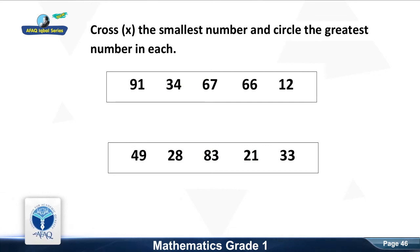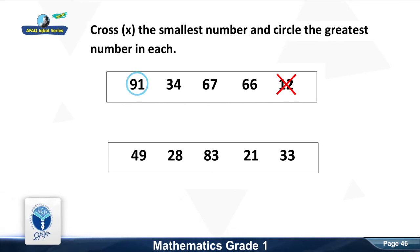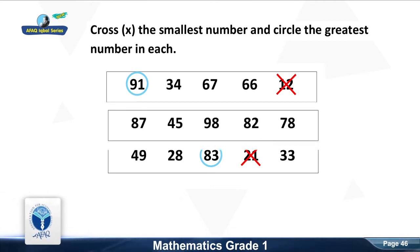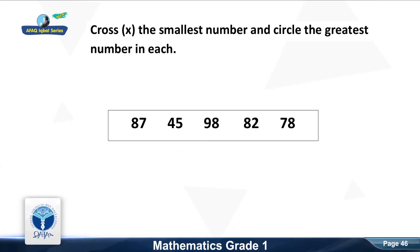Next group: cross the smallest number. Good, it is twelve. Circle the greatest number. Good, it is ninety-one. Next group: cross the smallest number. Good, it is forty-five. Circle the greatest number. Good, it is eighty-three. Next group: cross the smallest number. Good, it is forty-five. Circle the greatest number. Good, it is ninety-eight.